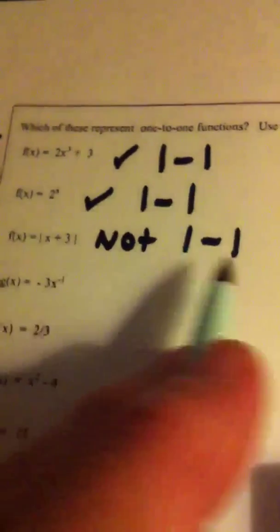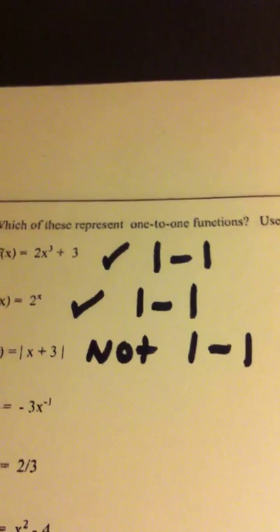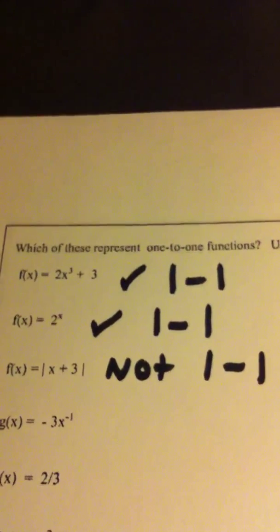The absolute value function is not one-to-one. In fact, no absolute value function is ever one-to-one. And that's because it has the shape of a V. Okay? So, what it means, and this is very important that you understand this.